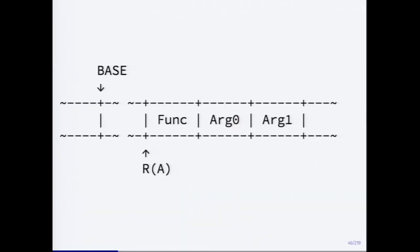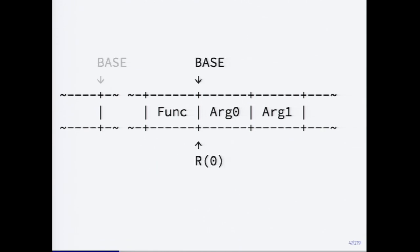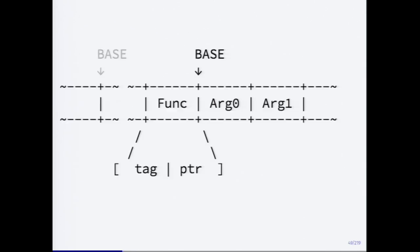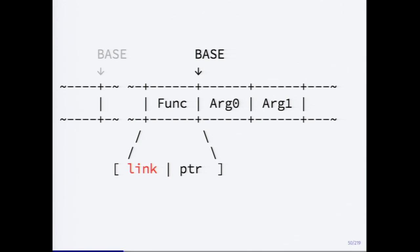One interesting thing is how simple the call sequence is: you take the function and just move the base pointer so that all your arguments are in the first N slots. The only thing you need to do is put information about where to return. You do this by stashing the return information in the upper 32 bits of the function's slot on the stack — since you know that slot contains a function, you don't need the type tag bits, so you can store the return information there without moving anything around.